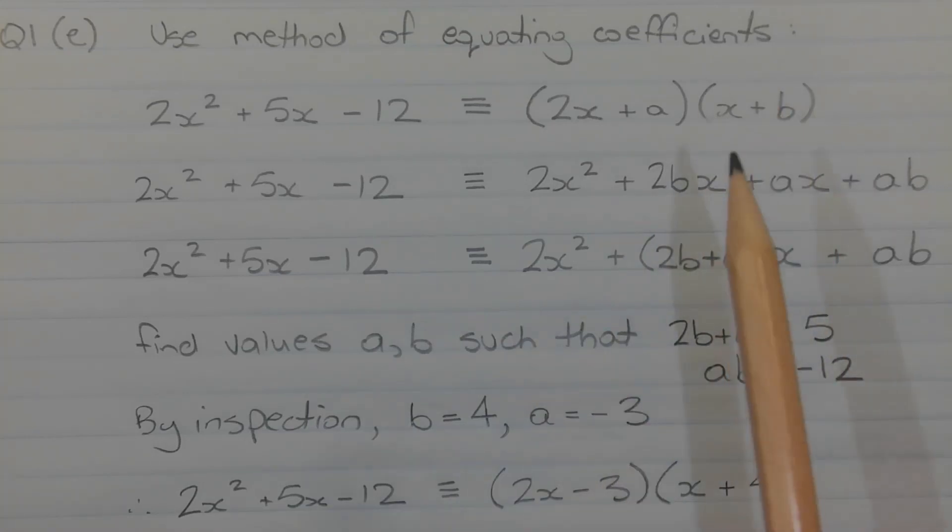Now at this point, I don't know the values of a and b. But what I do know is that this term here and this term here must be 2x and x respectively. And the reason for that is if I expand the right hand side, one of the terms that should arise is 2x squared.